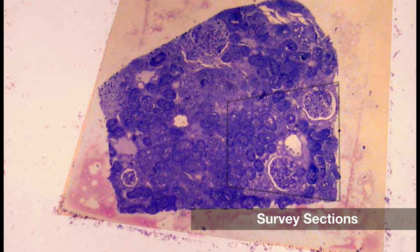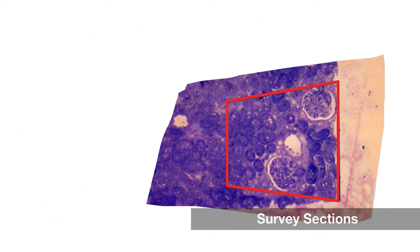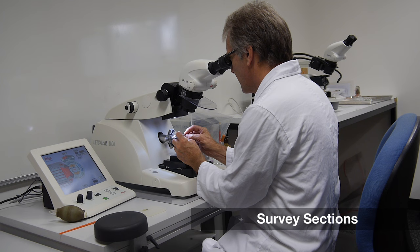Survey sections are too large and too thick to use in the electron microscope. Hence the block is re-trimmed to reduce the area of the cutting face. The re-trimmed block is returned to the ultramicrotome and realigned.